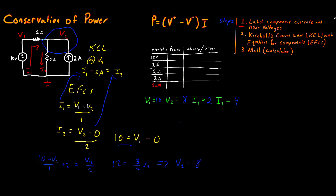Now that we know all the voltage and current values within our circuit, the next step is to calculate the power absorbed or delivered by each element. This is done the same way for every single element — no exceptions. You take the voltage difference across the component and multiply by the current through the component. Just like in Ohm's Law, it's very important that you subtract in the right direction — always subtract in the same direction that the current is flowing. Let's start with the 10 volt source.